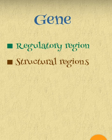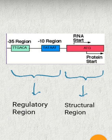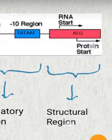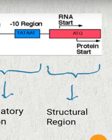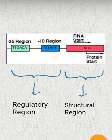A gene consists of two regions: the regulatory region and the structural region. The regulatory region, as its name suggests, helps to maintain or regulate the expression of the gene — it ensures when to make protein and when not to make protein. The structural region is the region which encodes for a specific protein under the action of the regulatory region.